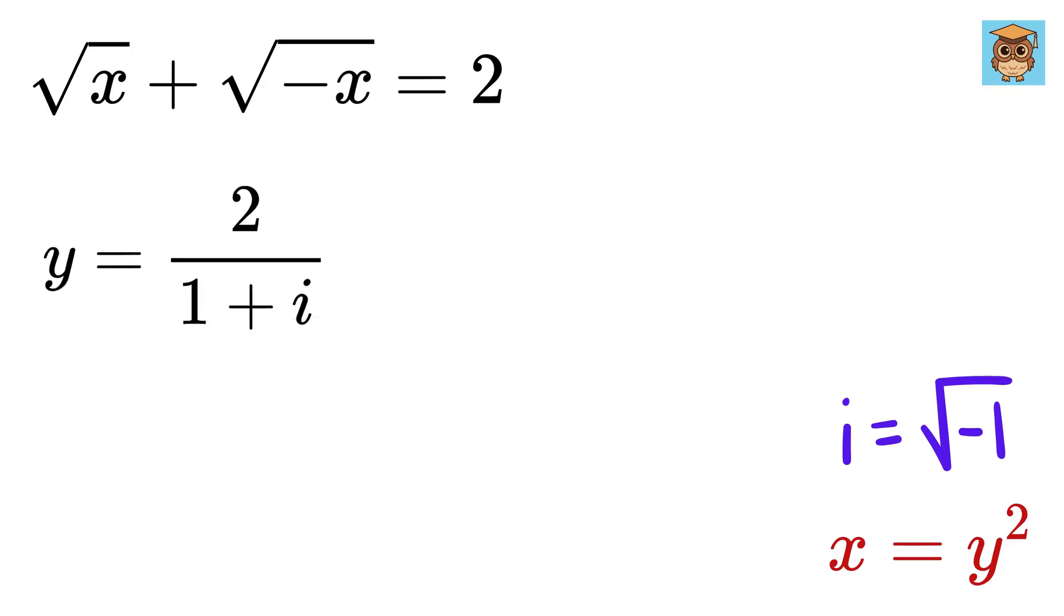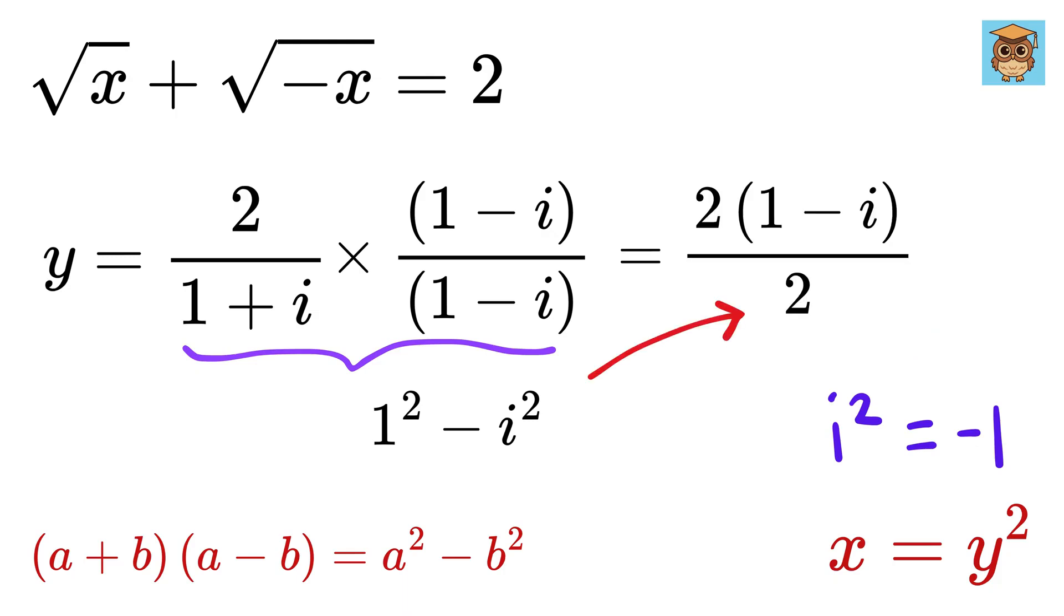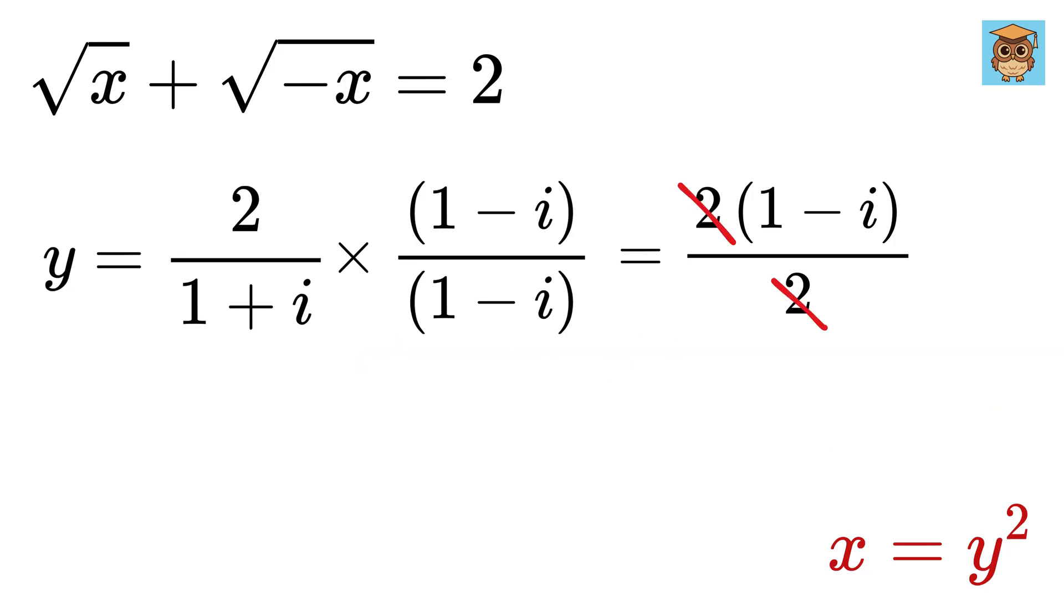Now, let us multiply and divide both sides by 1 minus i. Using this difference of squares formula, the denominator will become 1 square minus i square. i square equals minus 1, so the denominator equals 2. Thus, both these will be cancelled out, and y equals 1 minus i.